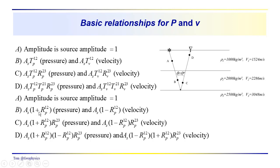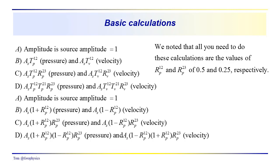We can express this in terms of the P-wave reflection coefficient, so that the amplitudes at B, C, and D can be computed just from a knowledge of the pressure wave reflection coefficient. That makes our calculation simple because all we have to do is calculate R_P(1,2) and R_P(2,3), and then we can calculate the amplitudes at B, C, and D along the ray path down and back to the surface.